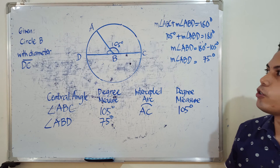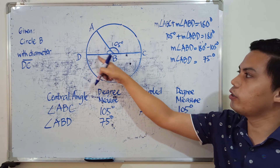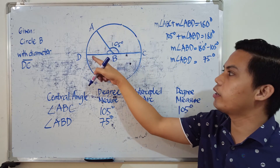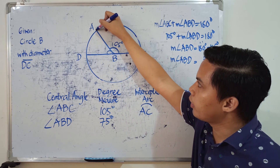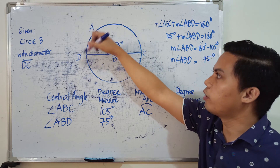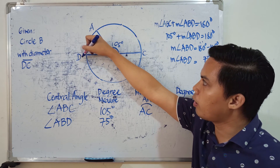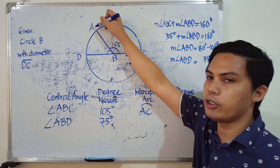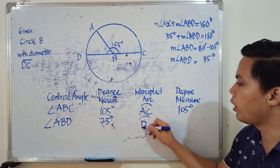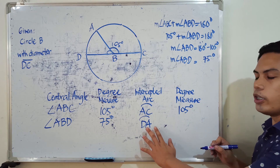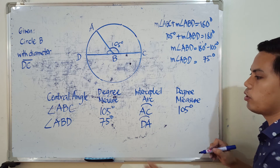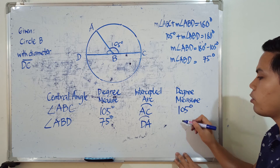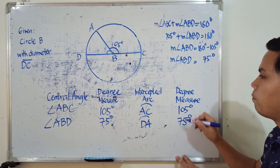Now, what is the intercepted arc of angle ABD? The intercepted arc corresponds to the part of the circle cut off by the central angle, using the endpoints of the angle. So the intercepted arc is arc AD. Since the central angle ABD is 75 degrees, it follows that intercepted arc AD is also 75 degrees.